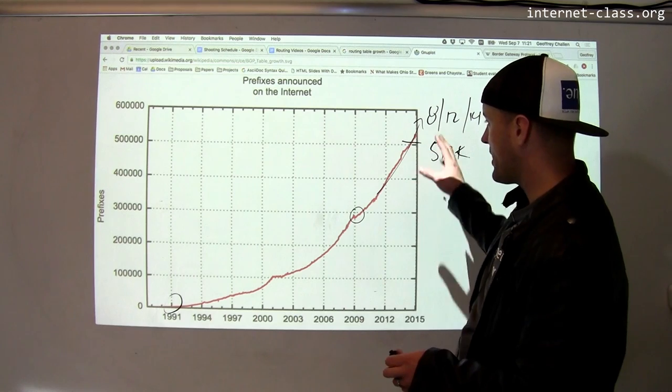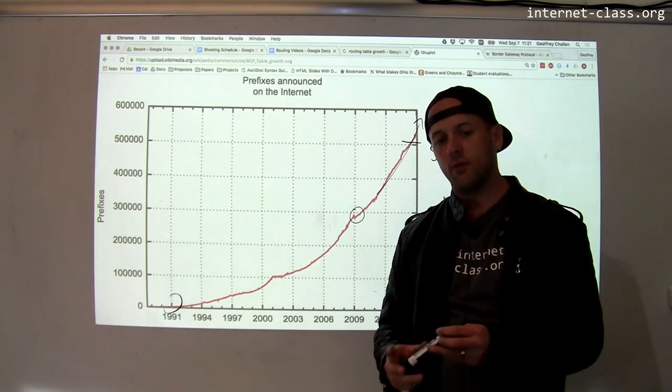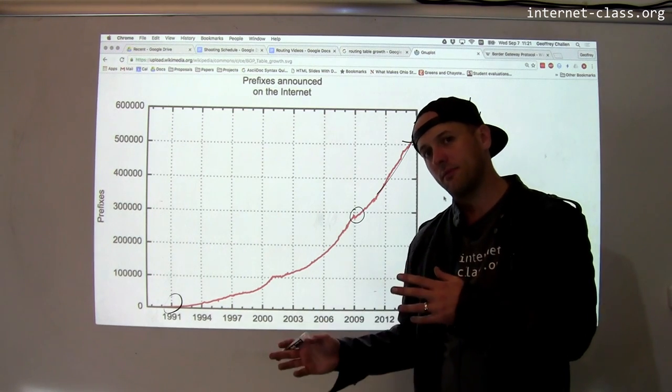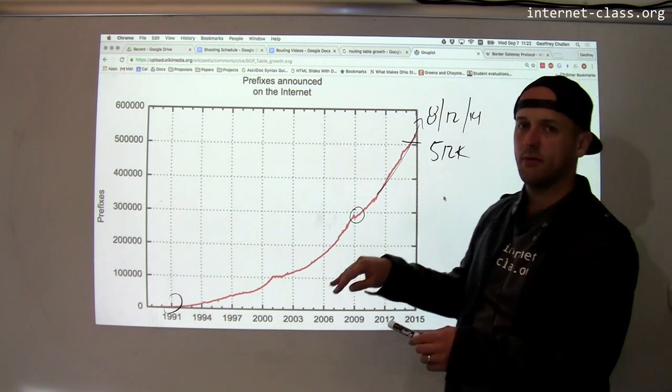So there was a configuration change that you could use to basically instruct the router to use more space for the IPv4 space and less for IPv6. But this growth has continued, right?